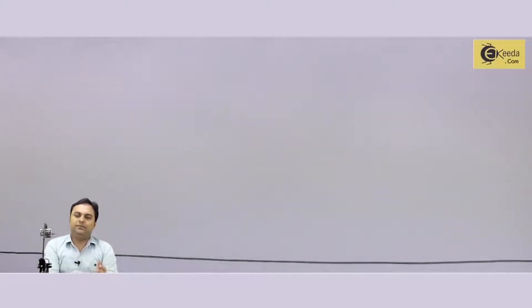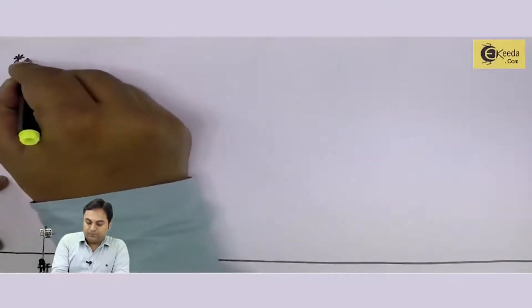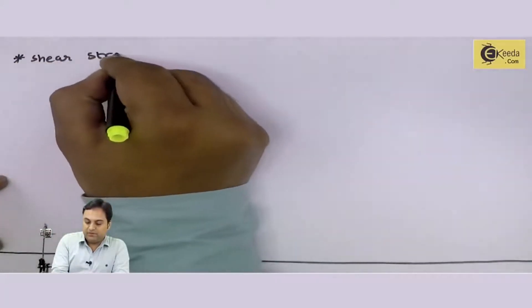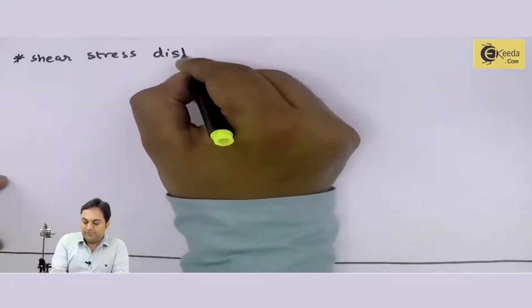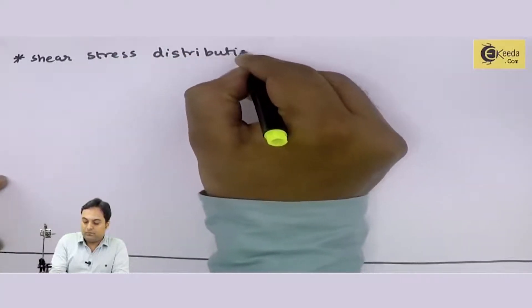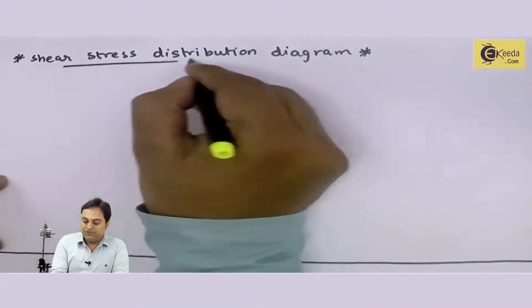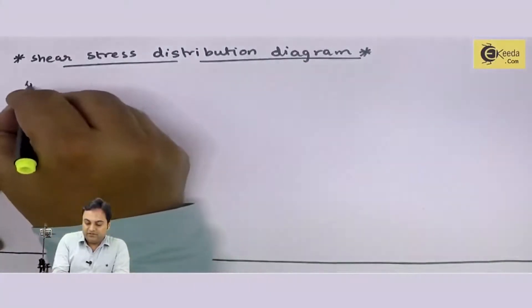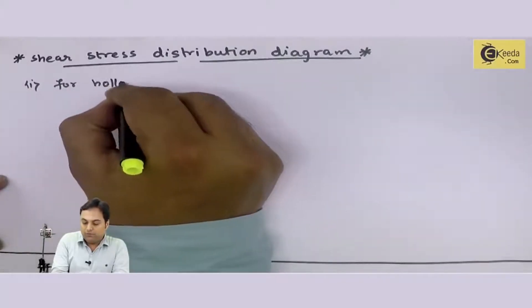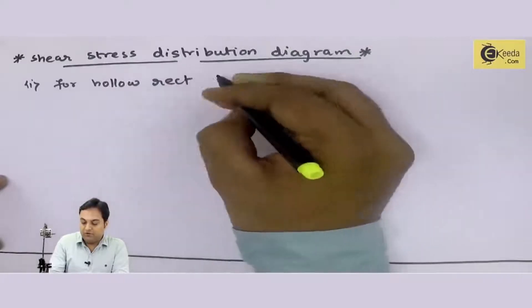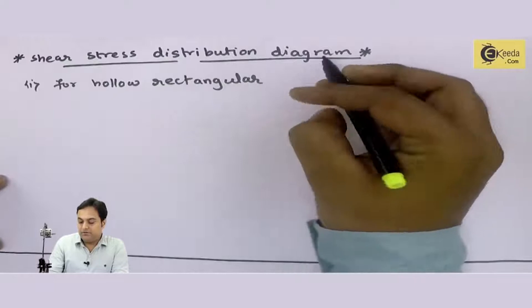This is almost the last stage of the chapter — this is the last part in the shear stresses chapter where we would be seeing the shear stress distribution for a hollow rectangular section. So let me show you that with a diagram. Here I have a shear stress distribution diagram, and this shear stress distribution diagram is for a hollow rectangular section.